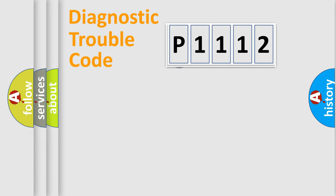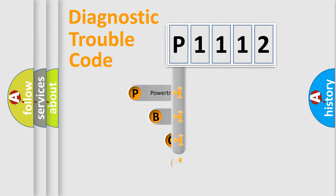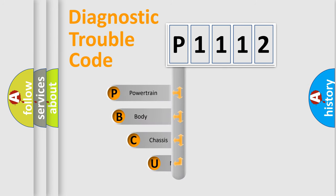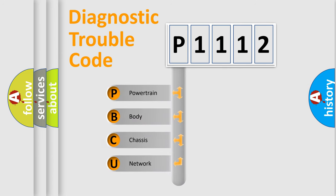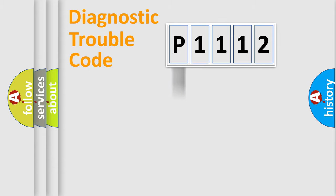First, let's look at the history of diagnostic fault code composition according to the OBD-2 protocol, which is unified for all automakers since 2000. We divide the electric system of automobile into four basic units: Powertrain, Body, Chassis, and Network. This distribution is defined in the first character of the code.